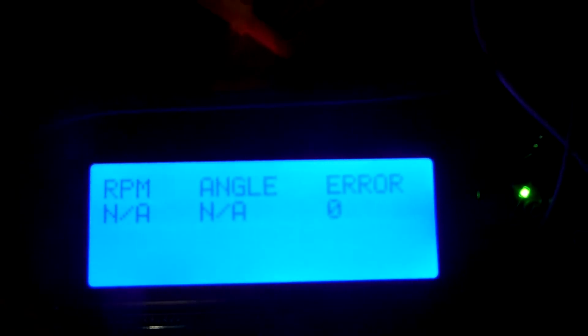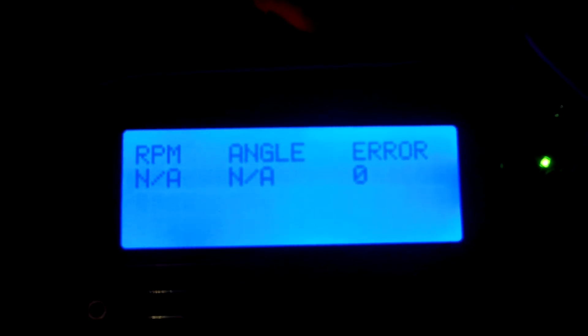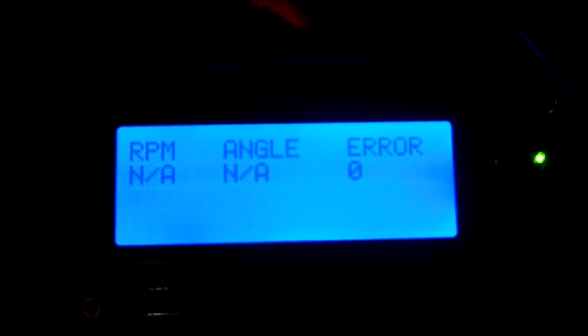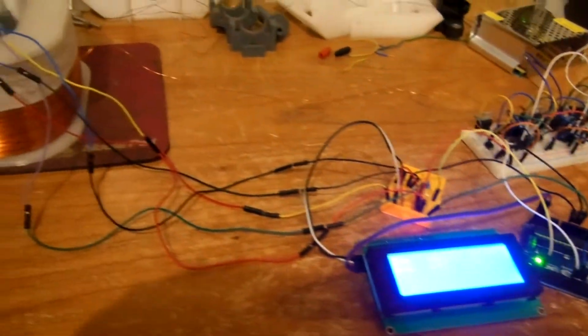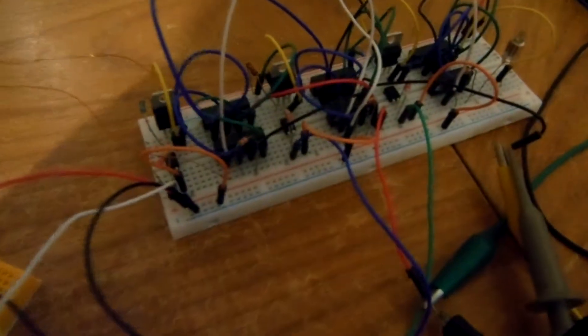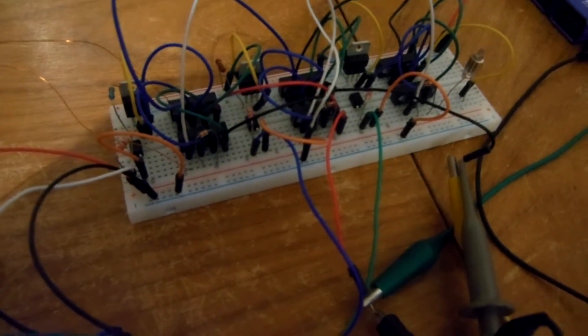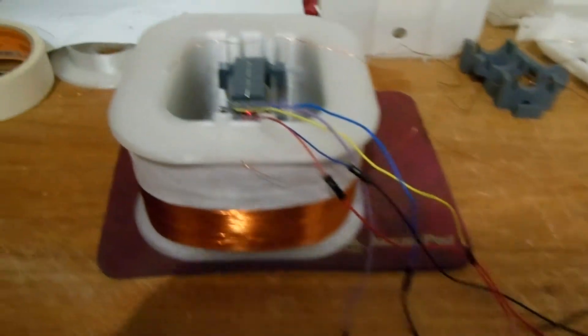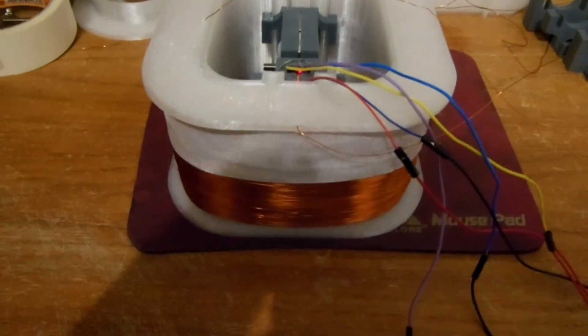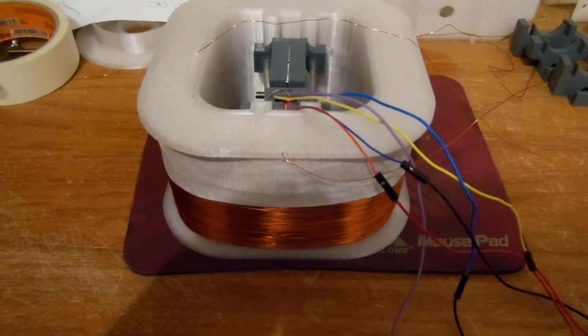There is also an LCD panel with some information about the current RPM, angle, and the amount of decoding errors. I'm using an H-bridge that's controlled by some reed relays so I can activate and deactivate the coil in the right rotation.